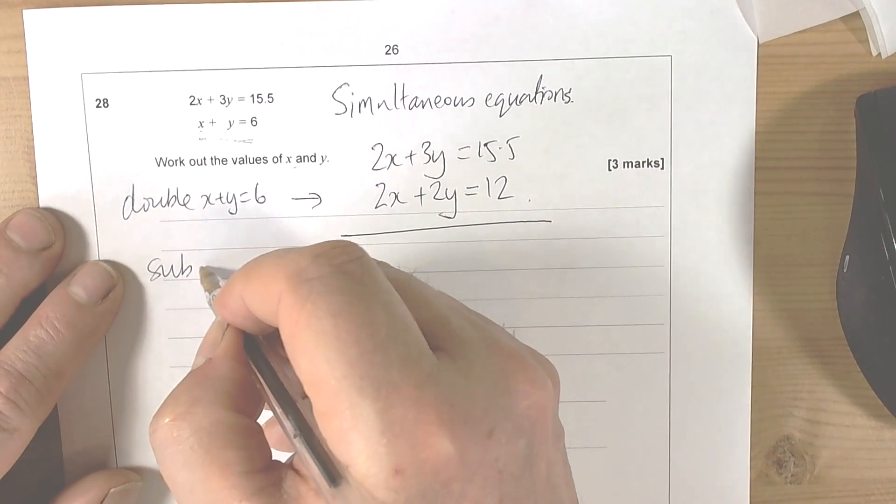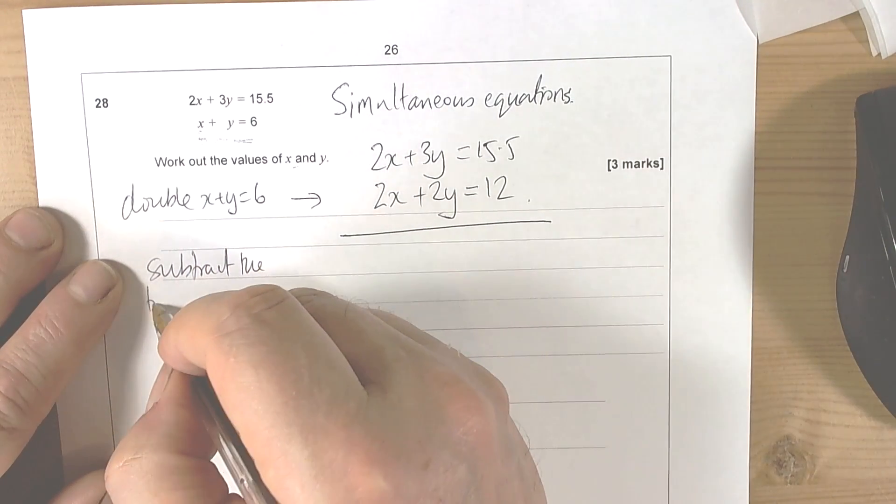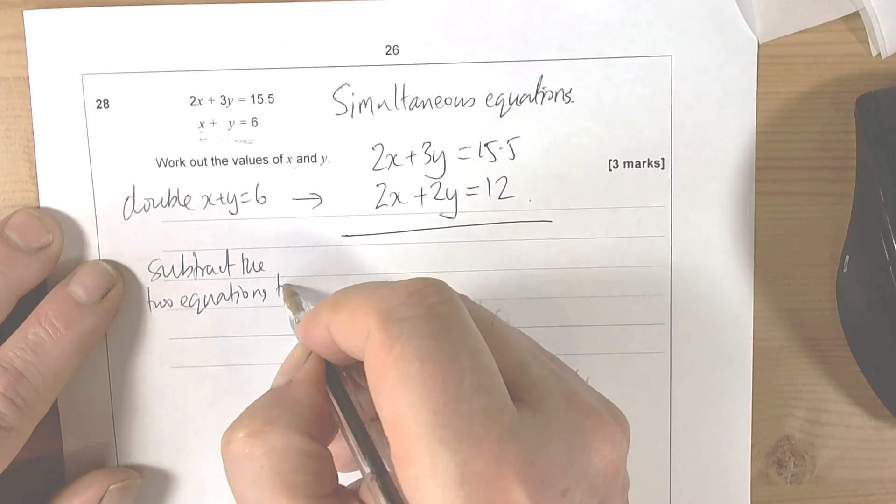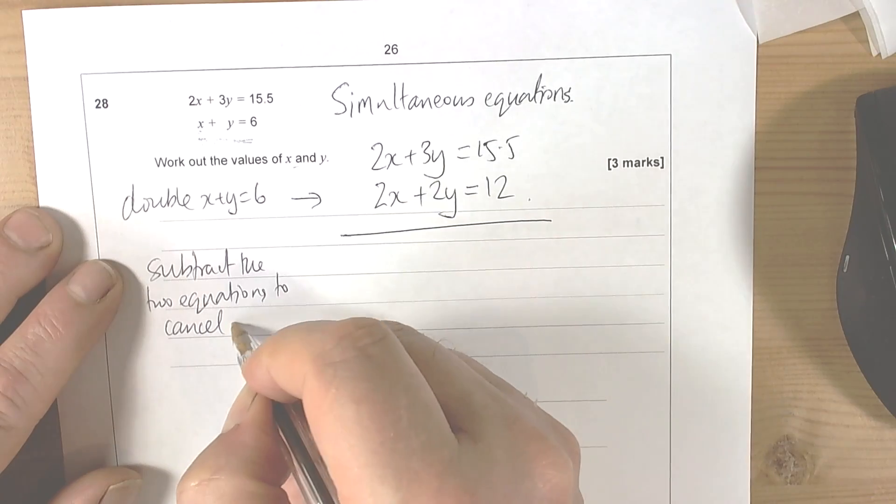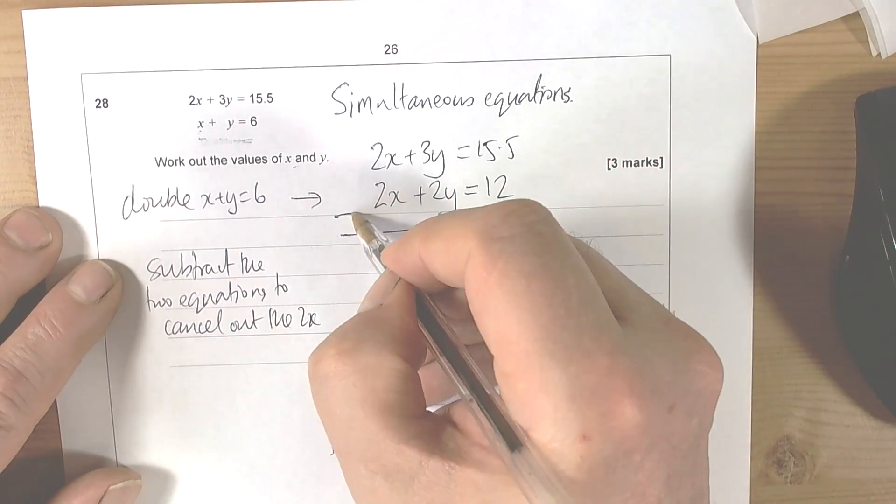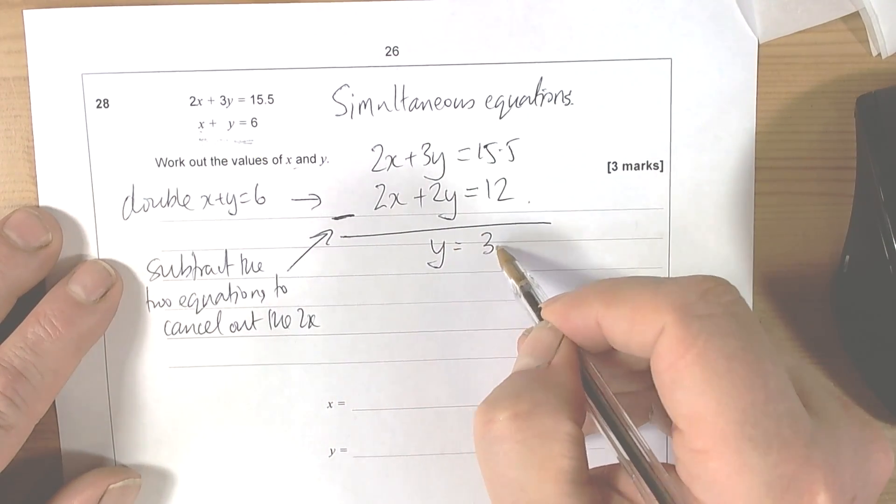So subtract the two equations to cancel out 2x, so we end with y is equal to 3.5.